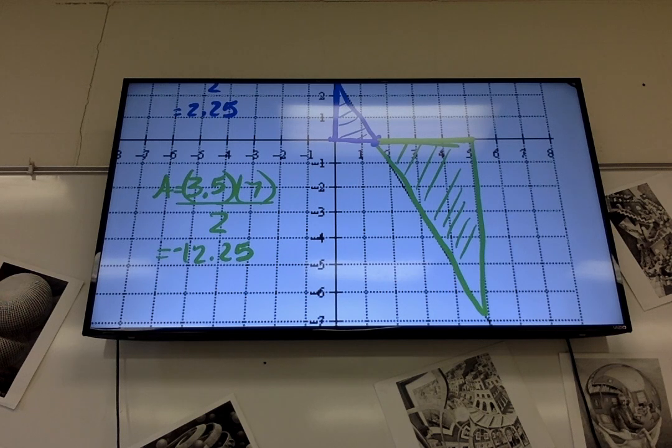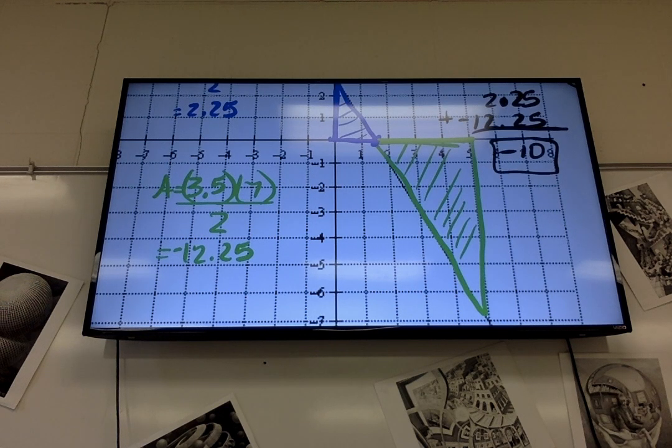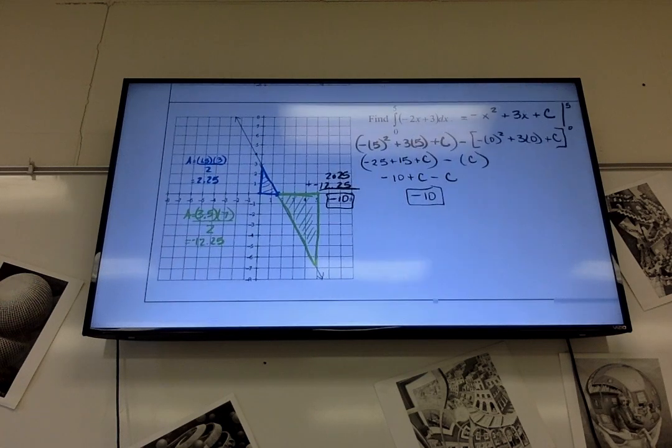So now when I find the area of those two shapes, you're right, I just add them together. So 2.25 plus negative 12.25 is negative 10. Wow. I know, right? So notice it's the same as what we found.